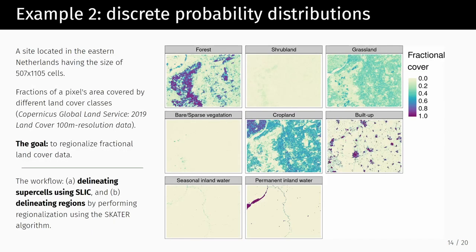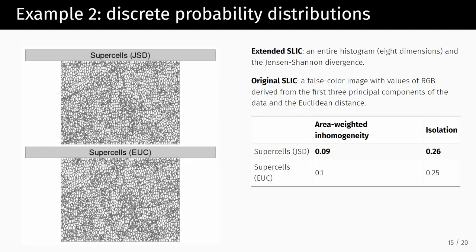The second example uses fractional land cover. For each cell, we don't have one value — we have eight values. For example, one cell is 70% forest and 30% shrubland. The goal is to create regions that are consistent and homogeneous but different from others. We used two steps: the first was to create supercells using the extended SLIC with Jensen-Shannon divergence versus the Euclidean-based original approach.